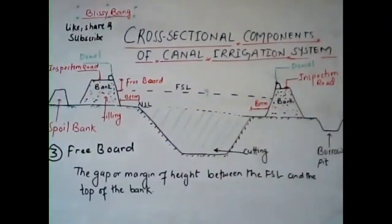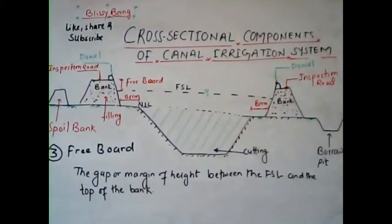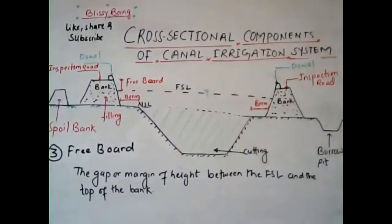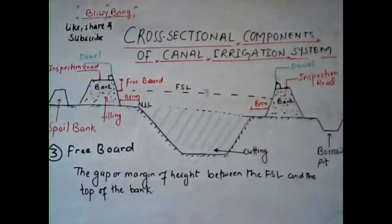The third cross-sectional element is the freeboard. It is the gap or margin between the full supply level and the top of the bank. Freeboard depends upon the size of the canal, its location, and water surface fluctuations. It is provided to keep a sufficient margin so that canal water does not overtop the bank in case of heavy rainfall or fluctuations in water supply, and to keep the saturation gradient line below the top of the bank.